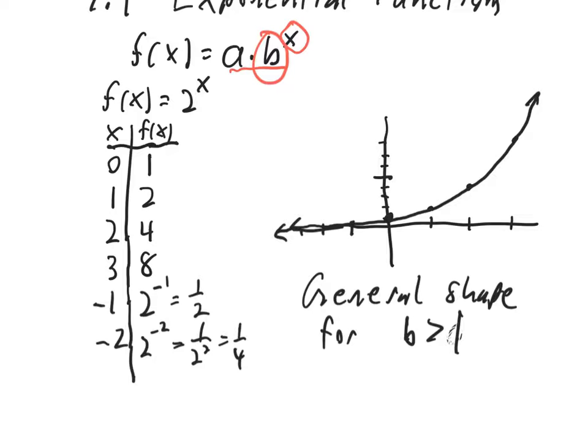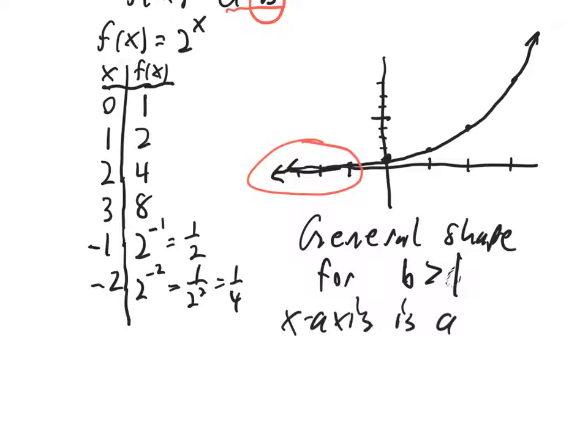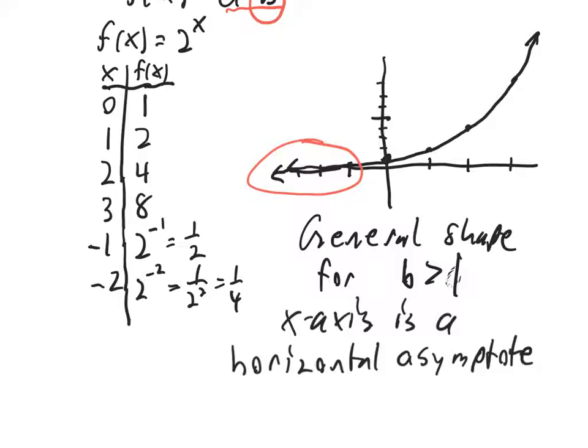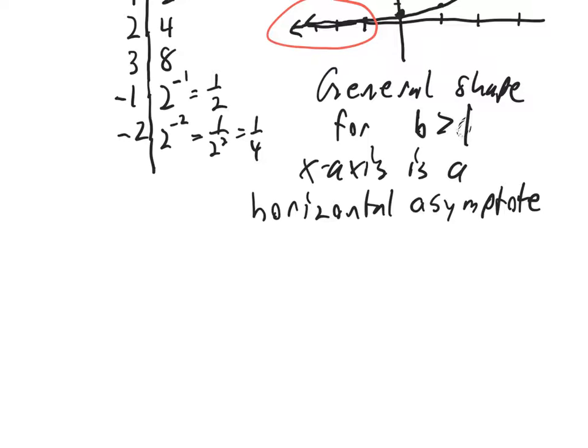And I guess one other term here. The graph on this side is hugging the x-axis. It never actually touches the x-axis but it gets closer and closer to it. So we say that the x-axis is a horizontal asymptote for the graph. Asymptote just means a line that the graph gets closer and closer to.